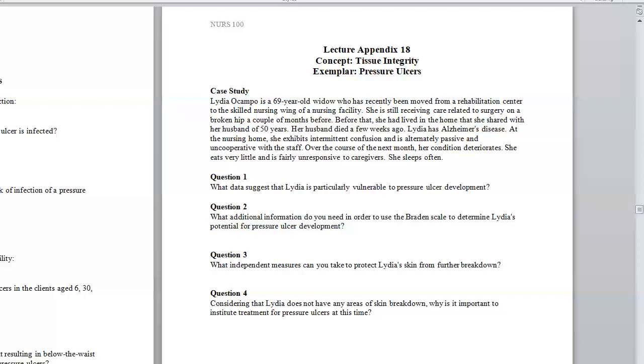So question two, what additional information do you need in order to use the Braden scale to determine Lydia's potential for pressure ulcer development? We would have to assess her sensory perception, moisture on the skin areas, and of course, friction and shear. We already know her activity level, mobility, and her nutrition. And all it is is just going back and reviewing that Braden scale. And I have loaded and uploaded a copy of the Braden scale into your Canvas course under week three, so you can review that. There is also a copy of that in your concepts book as well.